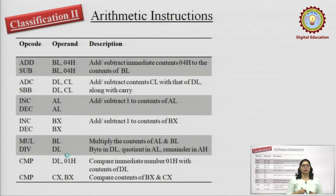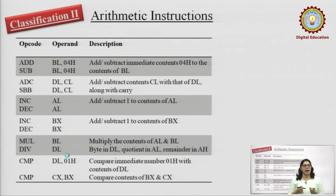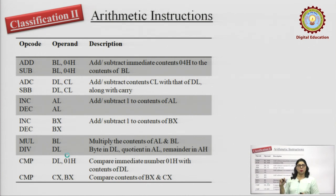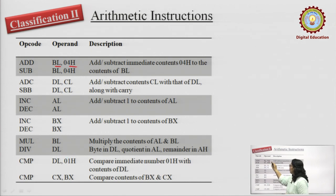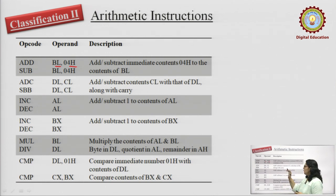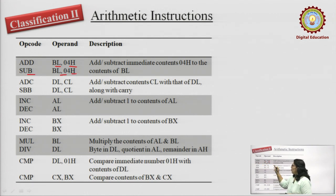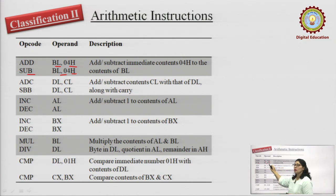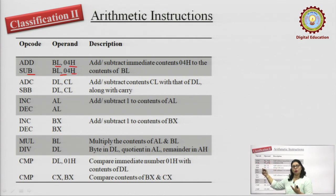The second classification is arithmetic instructions — that is, add, subtract, multiplication, divide, and comparison. Here are some examples: ADD BL, 04h means the 8-bit number in the BL register will have 04 added to it. SUB BL, 04h means the 8-bit number in BL will have 04 subtracted from it. Next, we have some versions of addition and subtraction: ADC stands for add with carry, meaning the contents of CL and DL are added while considering the carry.